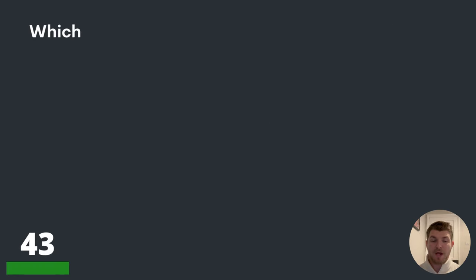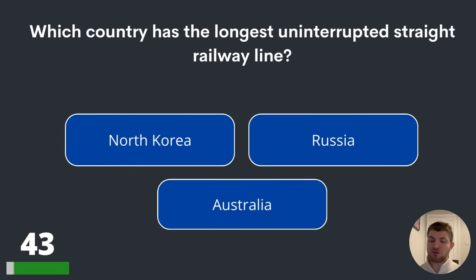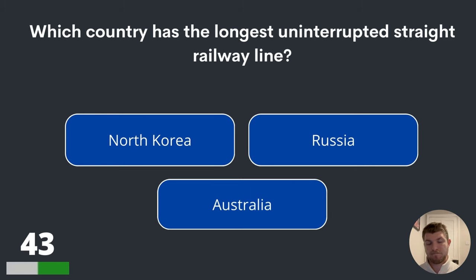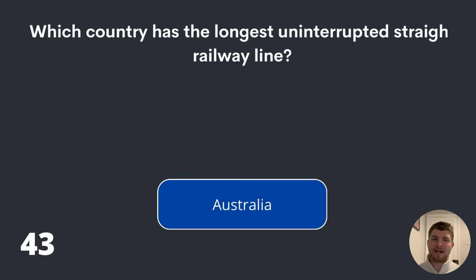Question forty-three. Which country has the longest uninterrupted straight railway line? North Korea, Russia or Australia? Australia. The answer is Australia.